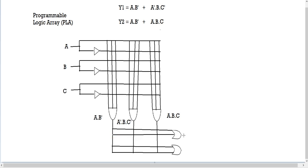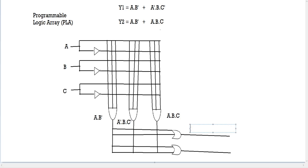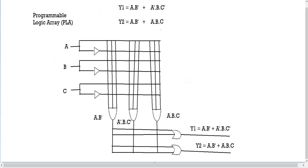There you have it — the basic PLA diagram. This is just the structure; we still need to make the connections. This OR gate is for y1, where y1 = A·B' + A'·B·C', and this one is for y2, where y2 = A·B' + A·B·C.